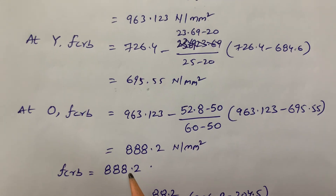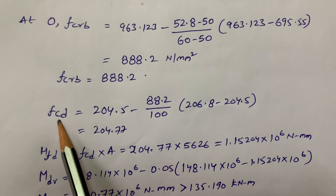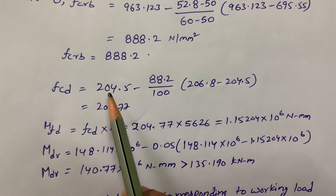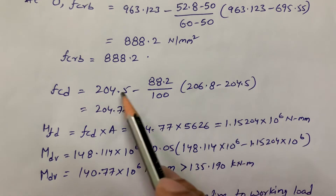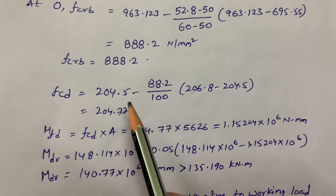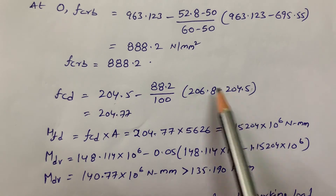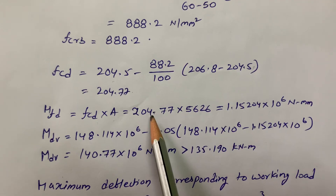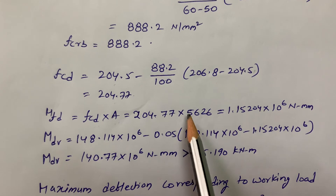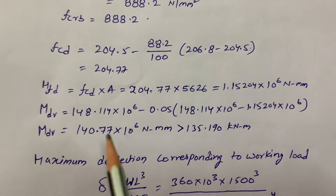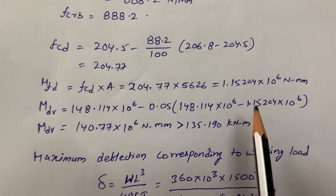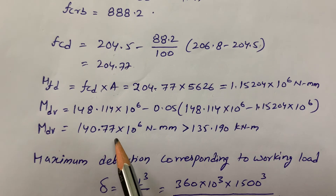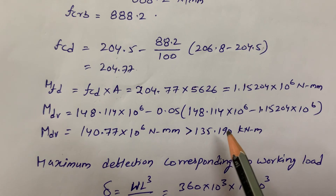After getting FCRB = 388.2 N/mm², I perform a single interpolation in Table 13A of IS800:2007 to get FCD = 204.77 N/mm², the design compressive stress. MFD = FCD × A = 204.77 × 5626 (area of ISMB 300). Substituting all values into the MDV formula, I get MDV = 140.77 × 10⁶ N·mm. Since 140.77 > 130.190 (our required moment), hence the section is safe.